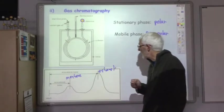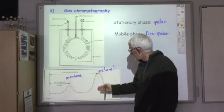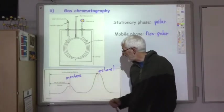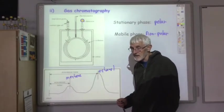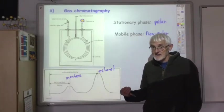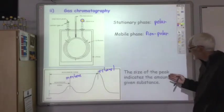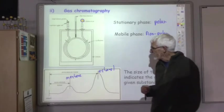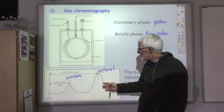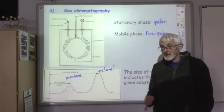You'll notice here that the ethanol peak, as well as having a longer retention time than the methane, is also a larger peak. So the size of the peak depends on how much of the substance is present in your sample. The size of the peak indicates the amount of the given substance. This suggests in our sample we had maybe three times the amount of ethanol than we did methane, because it's got a bigger peak telling us that there's more ethanol in our sample.